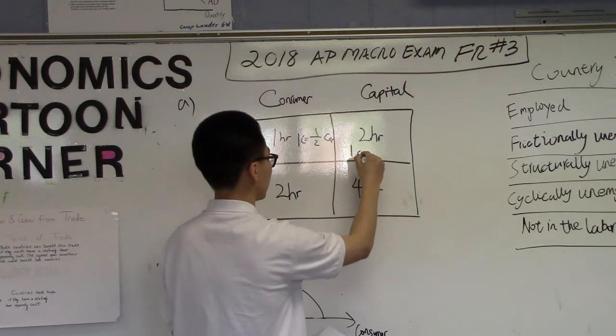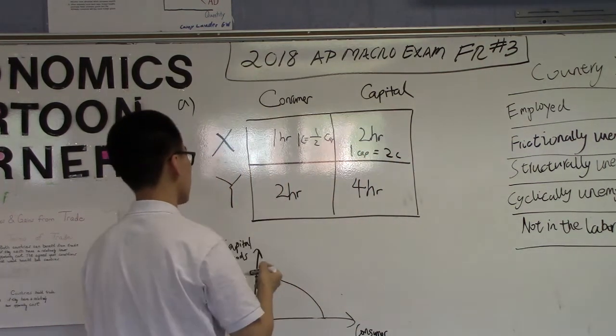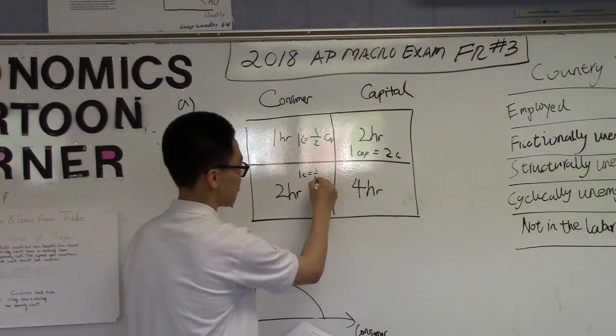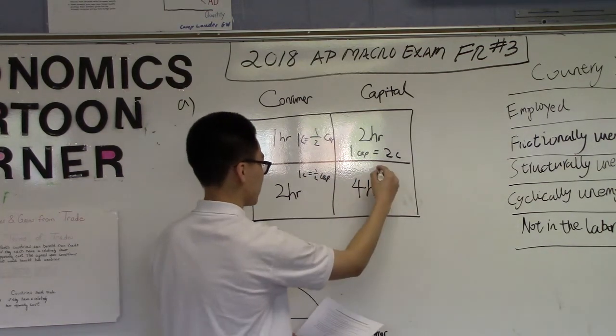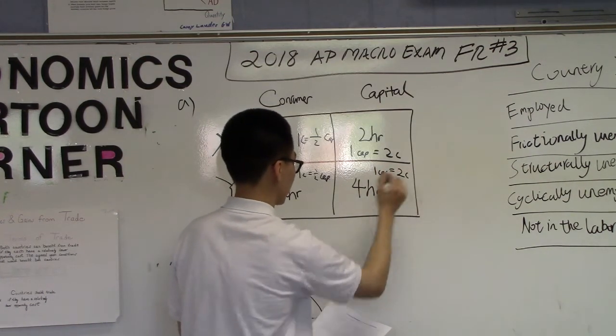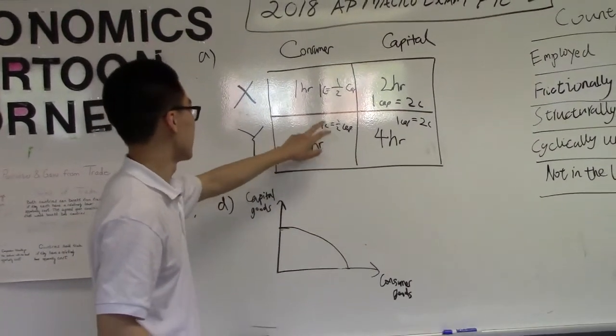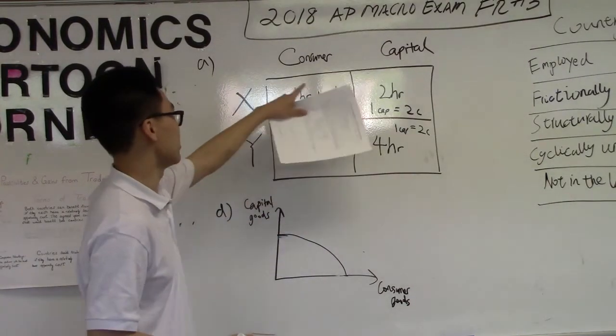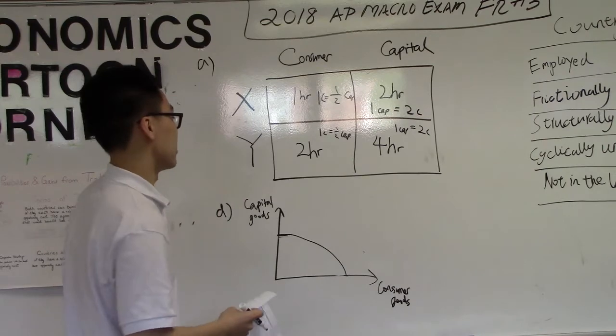And by producing one capital good, it will be two consumer goods for country X. And for country Y, the same thing: two over four. One consumer good is a half capital good. And by producing one capital good, it's four over two, which is two consumer goods. You can see that with the opportunity cost, both countries don't have any comparative advantage in either consumer goods or capital goods. They're better off producing themselves, better than trading.